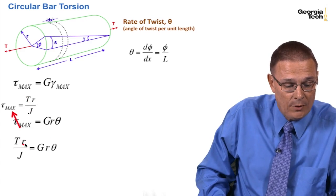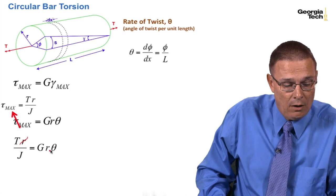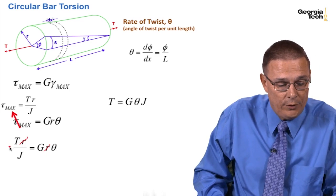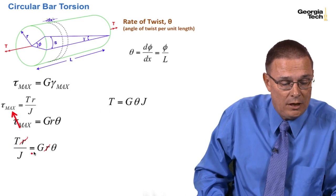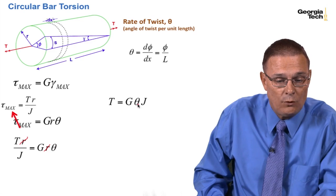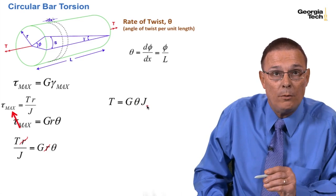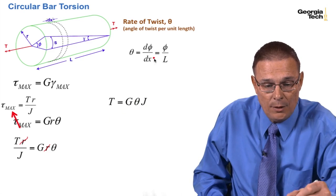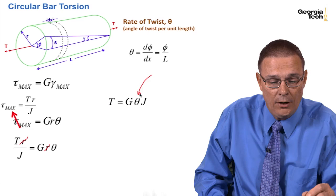When I equate these two, it looks like this. I can cross out the R's, and I end up with T, the applied torque, is equal to G, the modulus of rigidity, times the rate of twist times the polar moment of inertia.